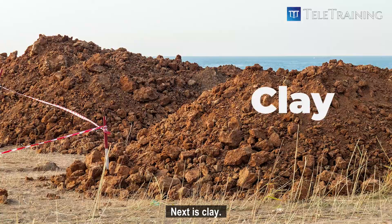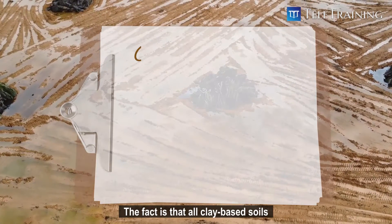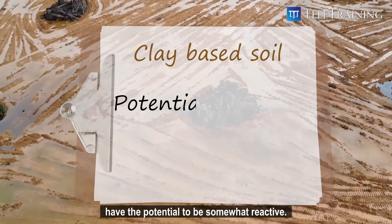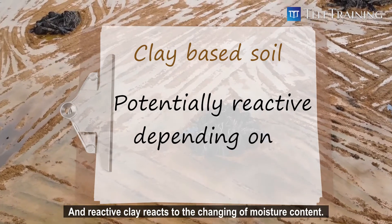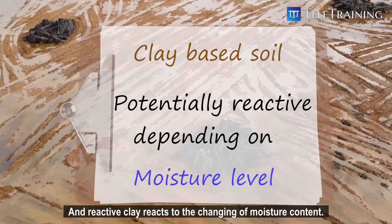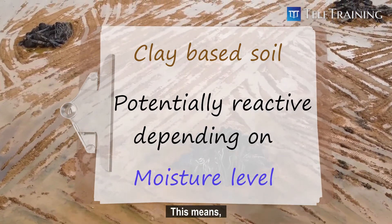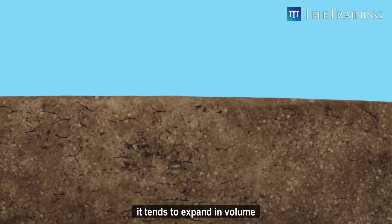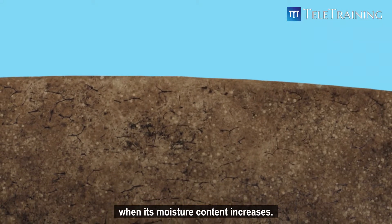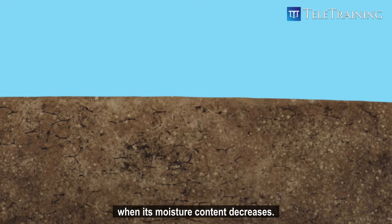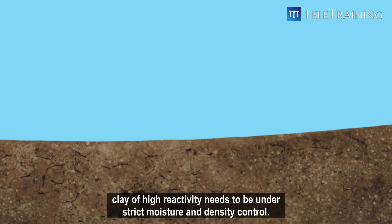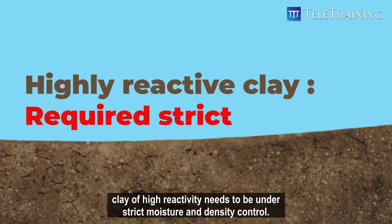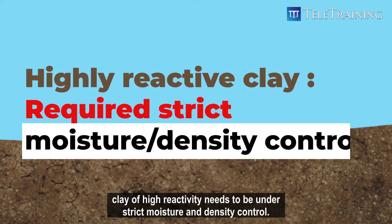Next is clay. All clay-based soils have the potential to be somewhat reactive, and reactive clay reacts to changes in moisture content. This means it tends to expand in volume when its moisture content increases, and to shrink when its moisture content decreases. Hence, clay of high reactivity needs to be under strict moisture and density control.